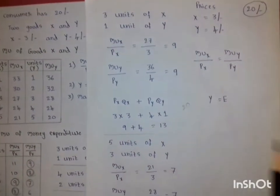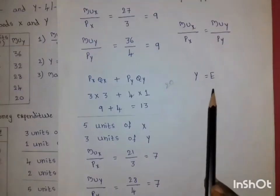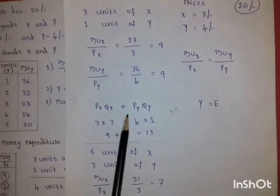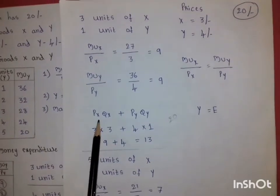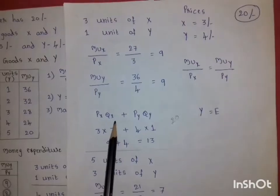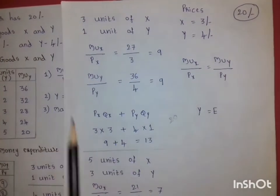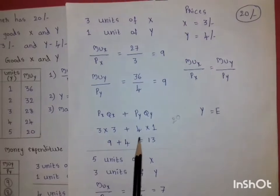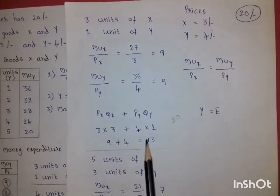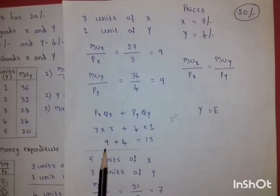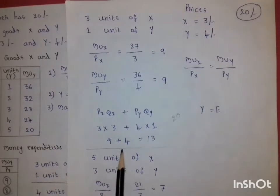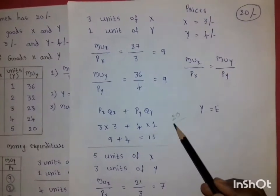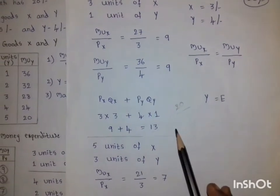However, for the second condition: Px × Qx + Py × Qy = 3 × 3 + 4 × 1 = 9 + 4 = 13. But the consumer's income is 20 rupees. Since income and expenditure are not equal, this combination does not satisfy the second condition.